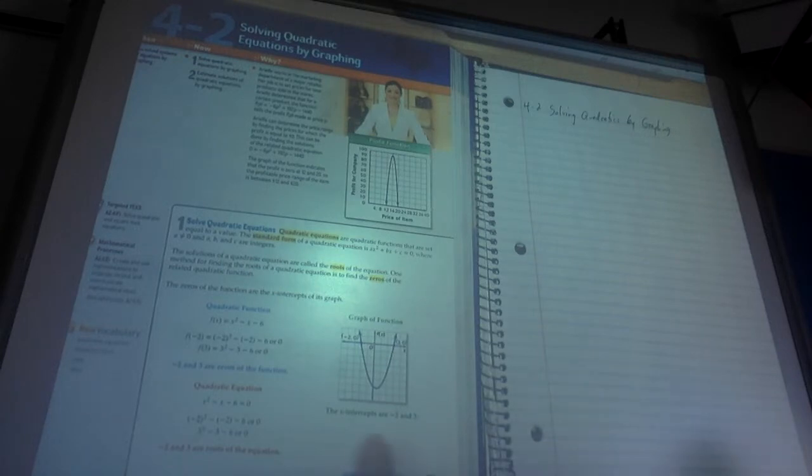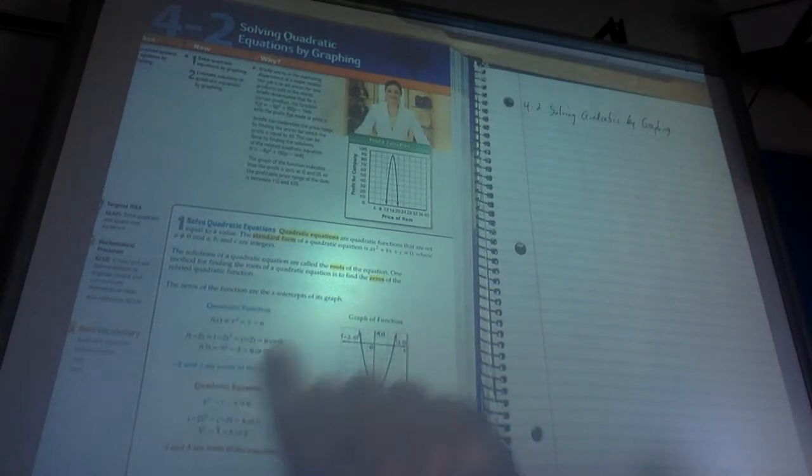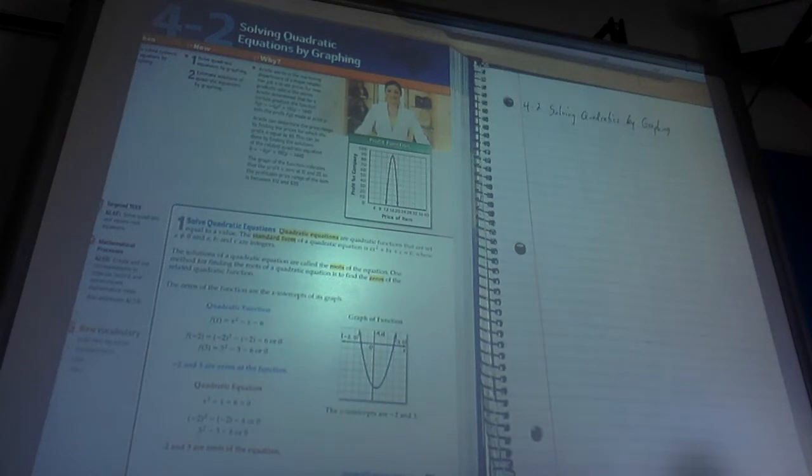Those are the two answers, in fact, they write it right here, the x-intercepts are negative 2, 3, and they come down here and write negative 2 and 3 are the roots of the equation. What they've done up here in blue is they've shown you how to plug in those values and get zero for the y.